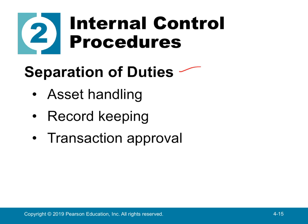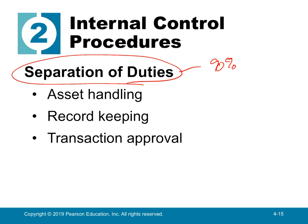Another key procedure is separation of duties. When it comes to cash controls, about 90% of the time the issue is separation of duties. You should never have the same person handling cash, recording cash transactions, and approving transactions. The story at the beginning of Chapter 4 about the coffee company shows a CFO who had way too much power and no separation of duties. People handling cash should always be different from people recording transactions.